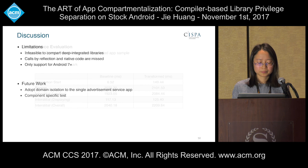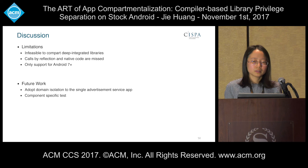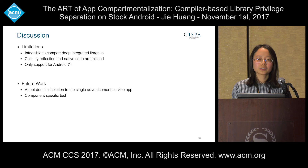The evaluation results show our solution can establish a strong trustworthy boundary between the host app and the remote advertisement app with only limited overhead. But there are still some limitations. Our solution is only suitable for loosely integrated libraries because of IPC overhead and visual fidelity problems. Library calls using reflection or native code directly are not covered in our solution. Compartist currently targets Android 7 and above, since it relies on Android's DEX-to-OAT compiler which was newly introduced in Android 7.